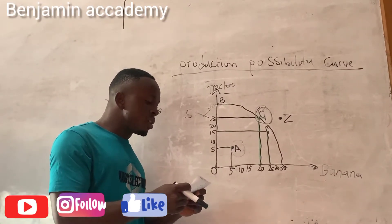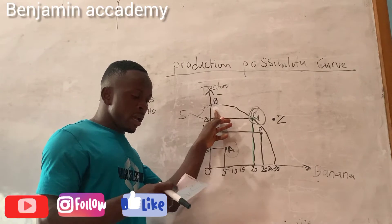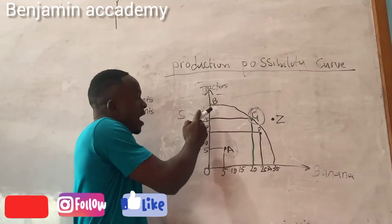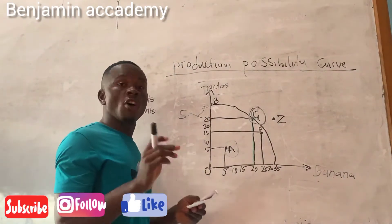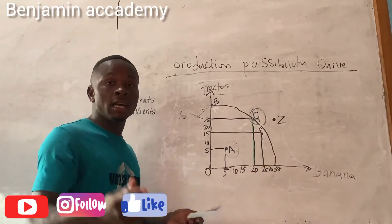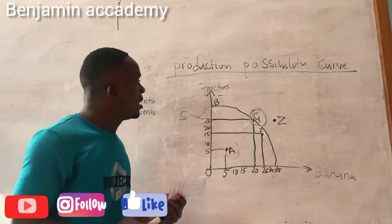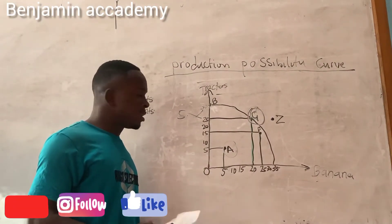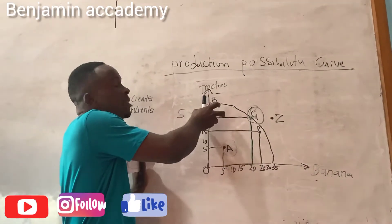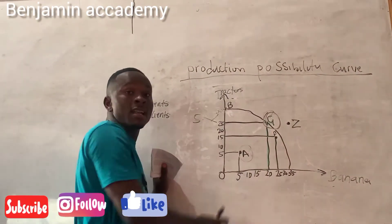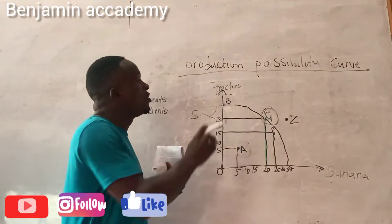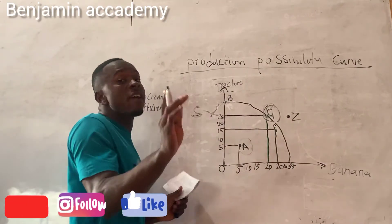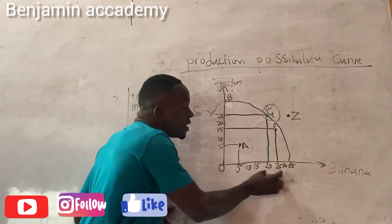Question 2: suppose a country at point B on the figure wants to move to point G. What will be the opportunity cost of producing banana? The country wants to move from point B to point G. The opportunity cost for this country to produce banana is to forgo 5 units of tractor in order to produce 20 units of banana.